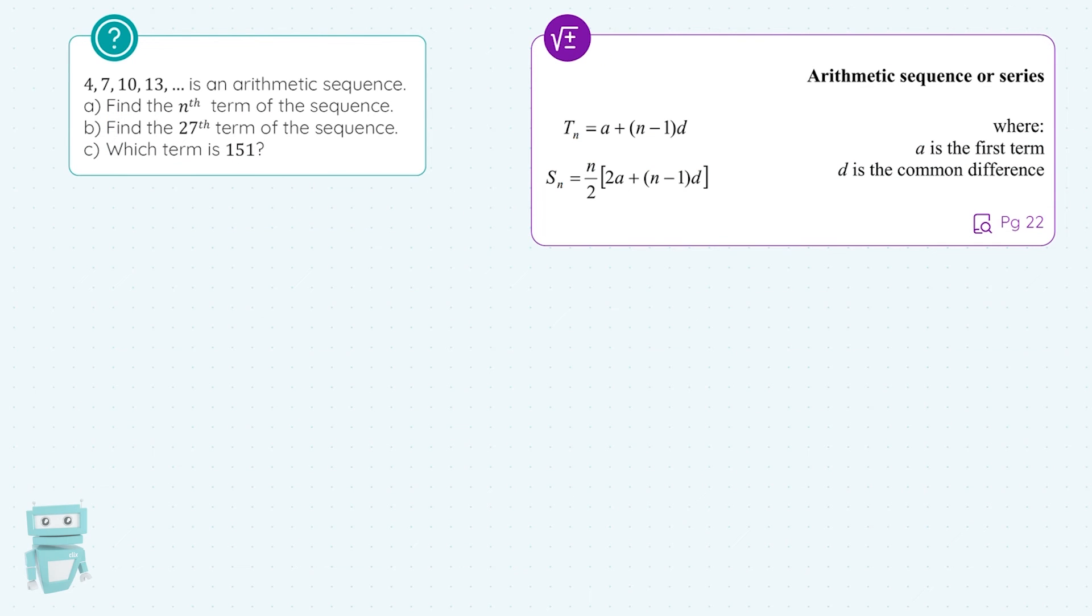The TN formula can then be used to solve some problems involving sequences. So if we look at a scenario here where we have our pattern 4, 7, 10, 13, and we're told it's an arithmetic sequence. In part A, we're going to find the nth term of the sequence, which is your general term formula. So let's just fly ahead and do exactly as we did above.